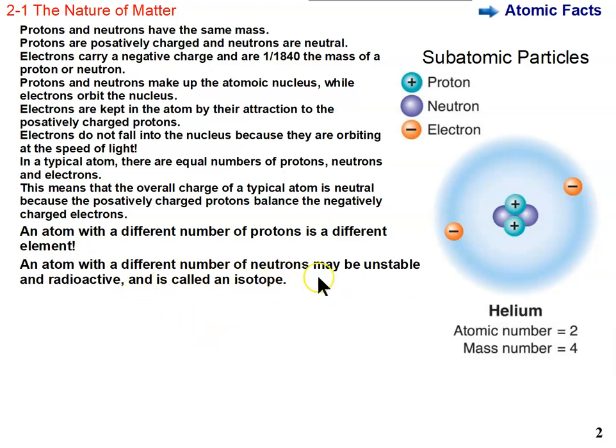A different number of neutrons may be unstable and radioactive, but either way, it's called an isotope. So an atom with a different number of neutrons is an isotope. For example, if this helium atom had either one less neutron or one more neutron, it would be an isotope of helium. It would still be helium because it has two protons.